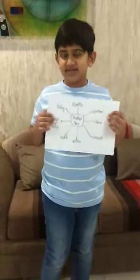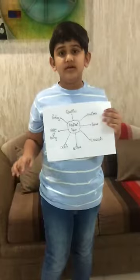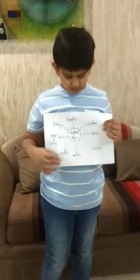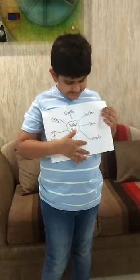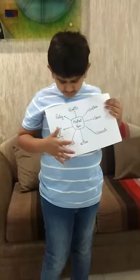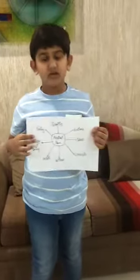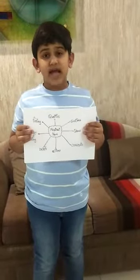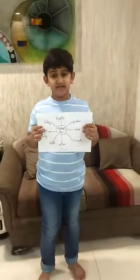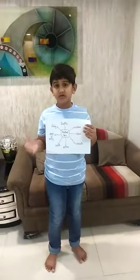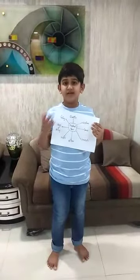On the other side, abstract nouns are not at all physical. They refer to qualities, emotions, ideas, concepts, actions, belief, state of being, or feelings. Most abstract nouns form from adjectives — such as brave giving bravery, happy giving happiness, and wise giving wisdom.